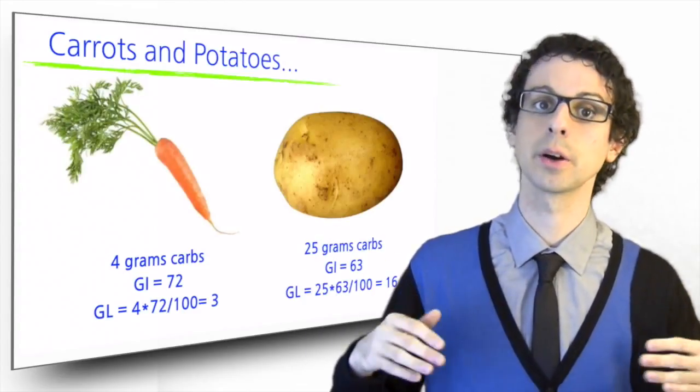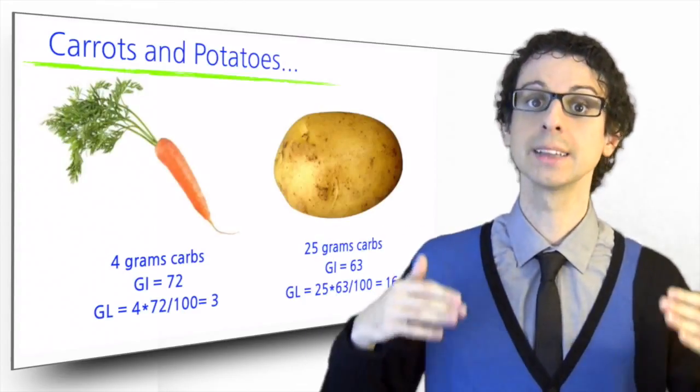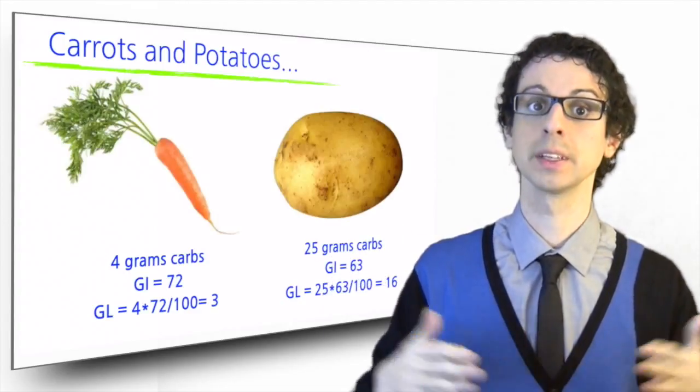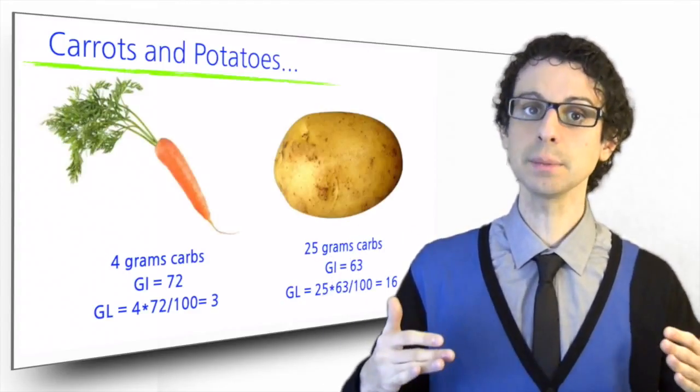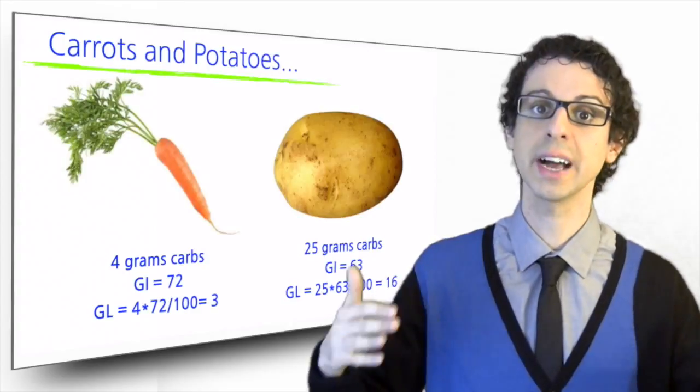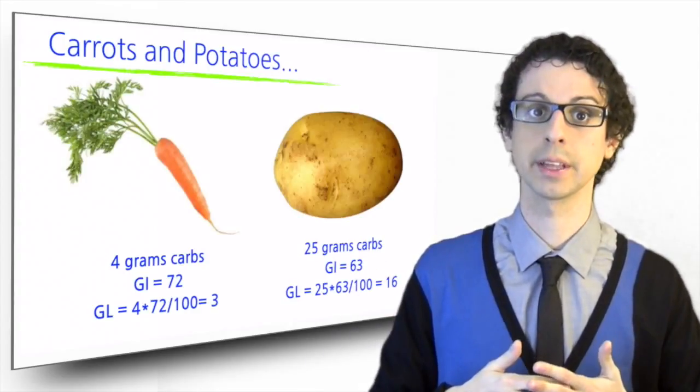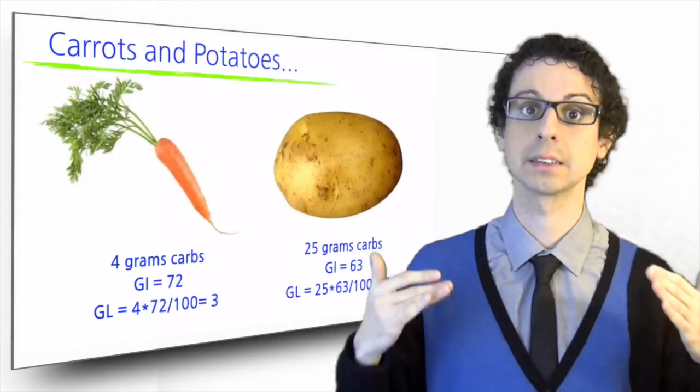The glycemic load of our potato would be 63 times 25 grams of carbs divided by 100, which is 16. So the glycemic load of our potato is more than five-fold the glycemic load of our carrot, even though its glycemic index is lower.